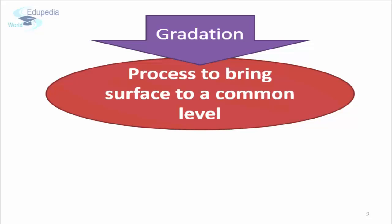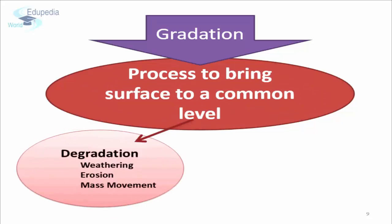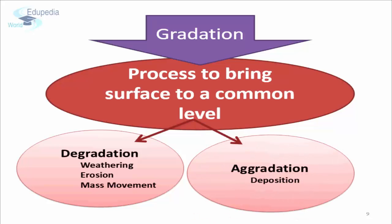Practically speaking, in nature this is not possible because the internal processes will always interfere with the work of the external processes. Gradation is the sum total of all processes which bring the earth surface to a common level, and it is achieved through two processes.